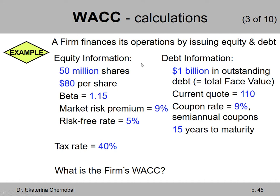We are given two columns. In the first column we have equity information, in the second column we have debt information. For equity: the firm has 50 million shares at $80 per share, beta equals 1.15, market risk premium equals 9%, and risk-free rate equals 5%.